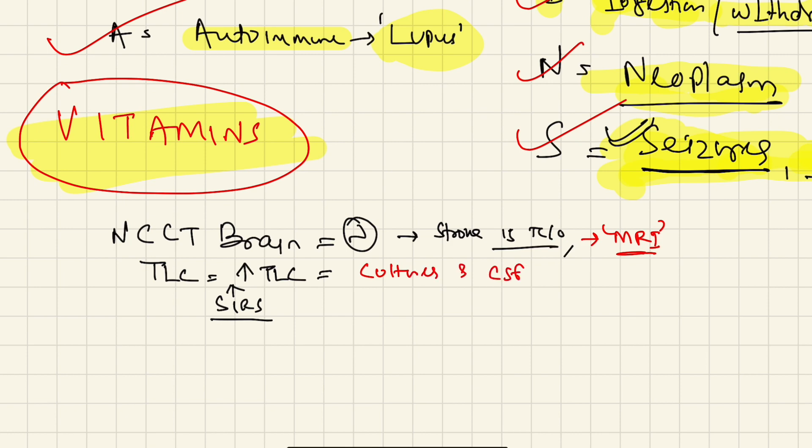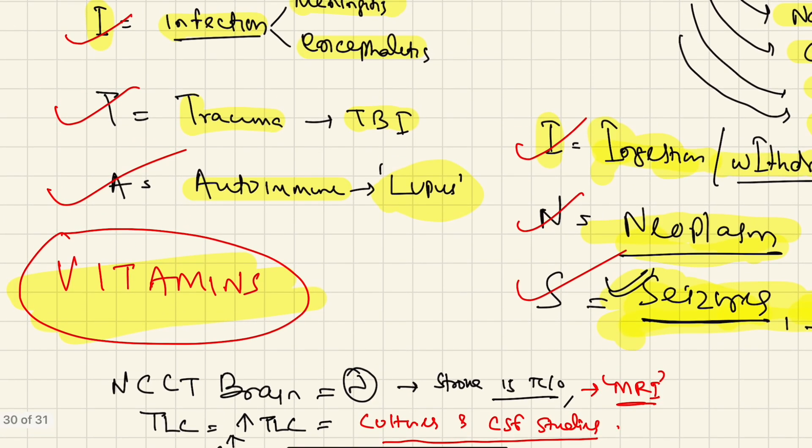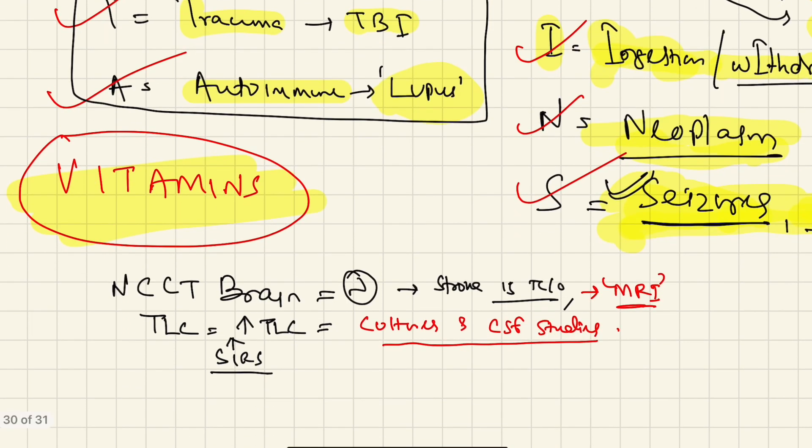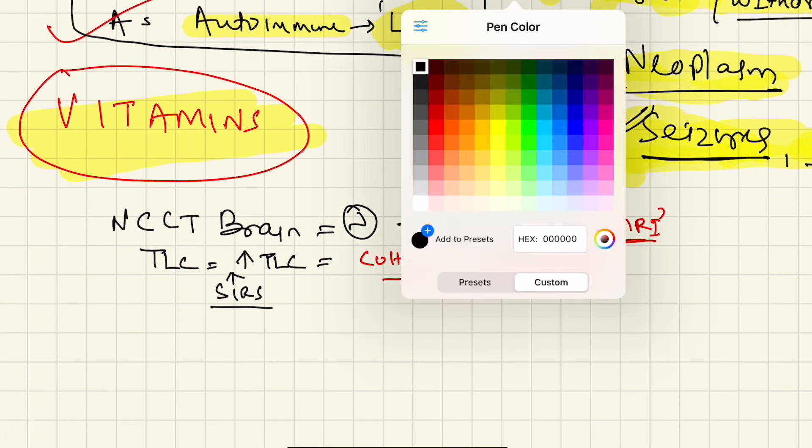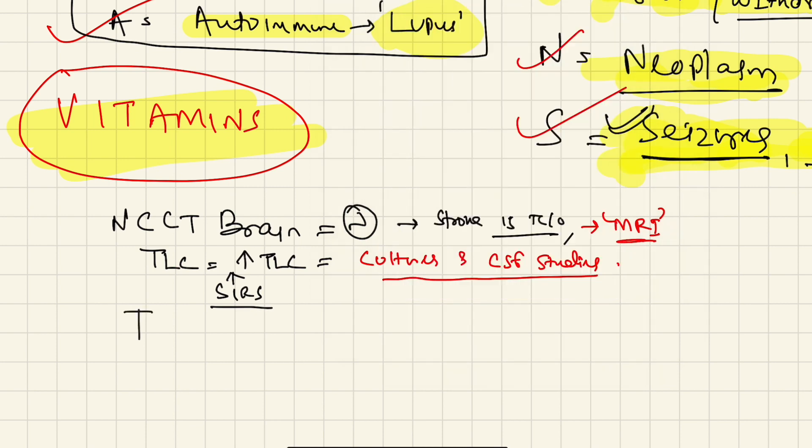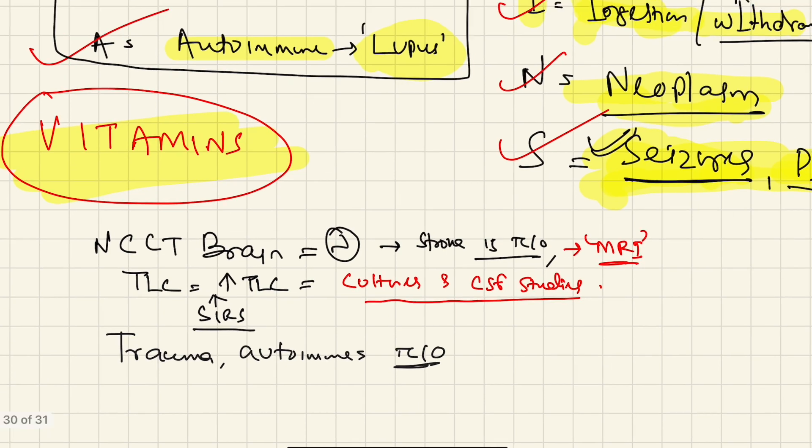Third is trauma. Trauma and autoimmune encephalitis - both of these things will be evident from the history. A patient who is having trauma or autoimmune disease - both of these in this case are ruled out. So trauma and autoimmune disease ruled out because there is no history. Then we have metabolic.